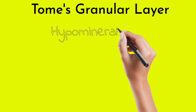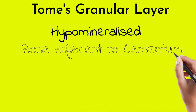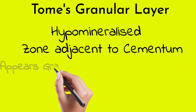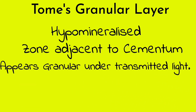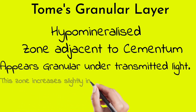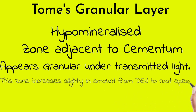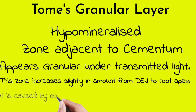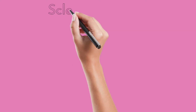Tomes' granular layer is a hypomineralized structure that is a zone adjacent to the cementum. It appears granular under transmitted light. This zone increases slightly in amount from the dentino-enamel junction to the root apex and is caused by the collapsing and looping of the terminal portions of the dentinal tubules.